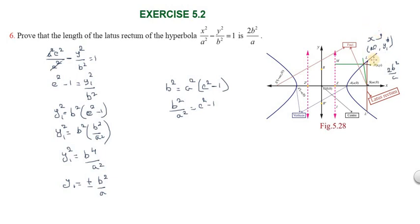So the two points are: one point at (ae, b²/a) and another point at (ae, -b²/a). These are the points L and L' on the latus rectum, with coordinates (ae, b²/a) and (ae, -b²/a).